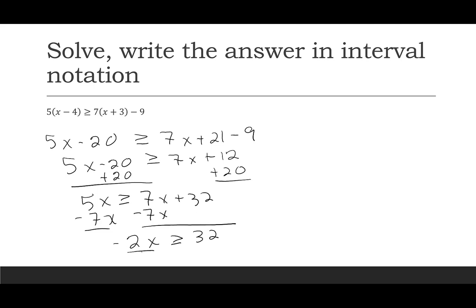That negative 2 — when I divide by it, I need to remember to flip my inequality. So x is less than or equal to now. 32 over negative 2 is negative 16.